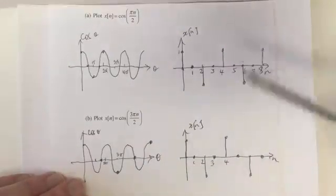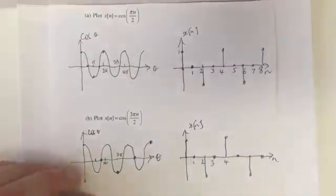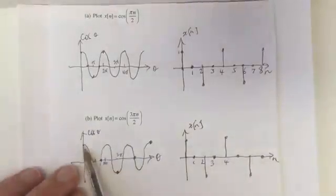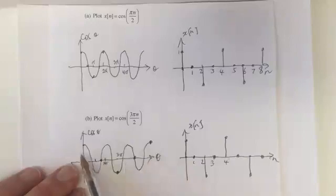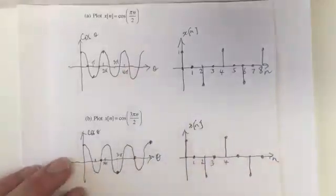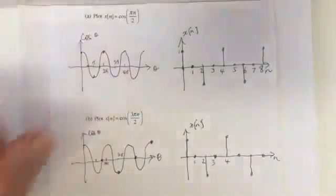So this graph is the same as this graph. This is because in discrete time, because of this fact here, these two waveforms go through the same points at the sampling rate, even though they are different frequencies.